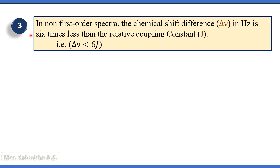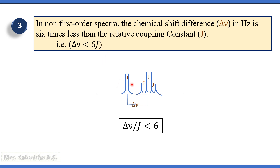The third criteria is that in non-first order spectra, the chemical shift difference delta nu in hertz is 6 times less than the coupling constant — that is, delta nu divided by J is less than 6. This is the important criteria for non-first order spectra. In case of first order spectra, delta nu by J is greater than 6, but in case of non-first order spectra, it is less than 6. That is the important criteria for distinguishing first order and non-first order spectra.